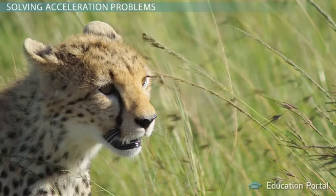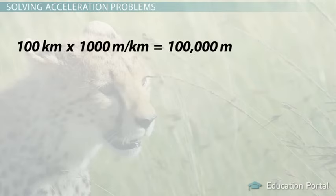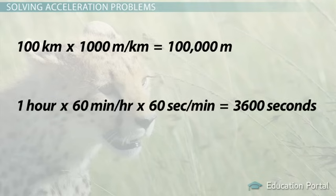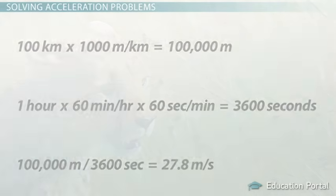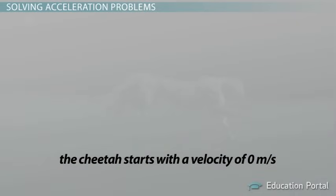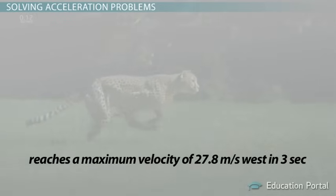First, we need to convert kilometers per hour to meters per second. 100 kilometers times 1,000 meters per kilometer equals 100,000 meters. One hour times 60 minutes in an hour times 60 seconds per minute is 3,600 seconds. 100,000 meters divided by 3,600 seconds is 27.8 meters per second. The cheetah starts with a velocity of zero meters per second because he is not moving. He begins running west after a gazelle and reaches a maximum velocity of 27.8 meters per second west in three seconds.